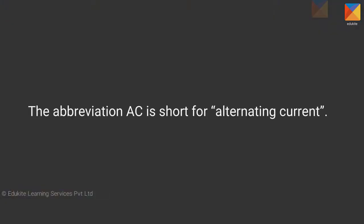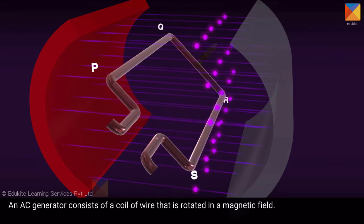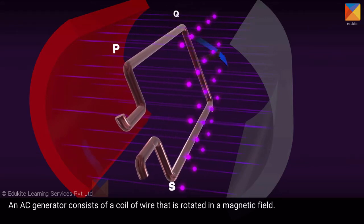The abbreviation AC is short for alternating current. An AC generator consists of a coil of wire that is rotated in a magnetic field.